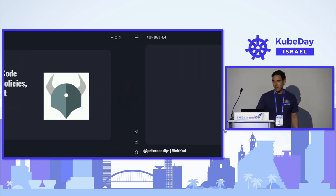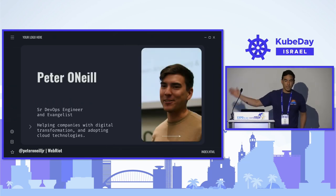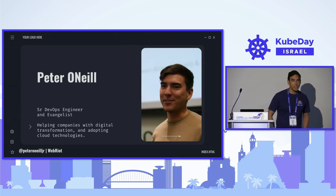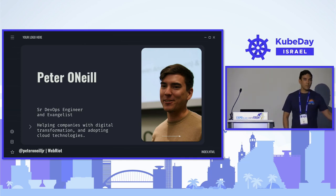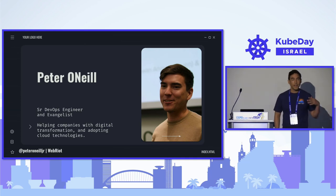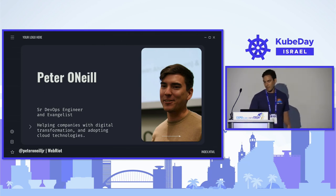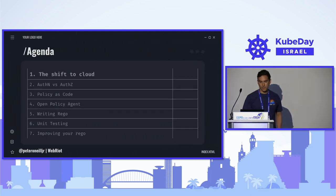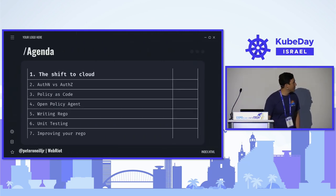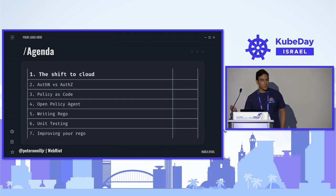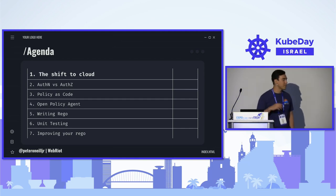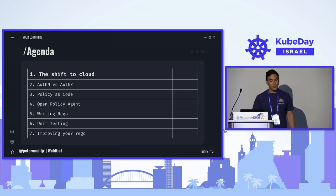So starting off, my name is Peter O'Neill. I am a senior DevOps engineer and evangelist for a company called Webrite. We help do digital transformations and helping companies move their legacy technologies to the cloud. Today's agenda: I'll talk a little bit about why Open Policy Agent came about, the difference between AuthN and AuthZ, what it means for something to be policy as code, then we'll dive into the Open Policy Agent project, and then we'll get into writing Rego and doing some unit testing.